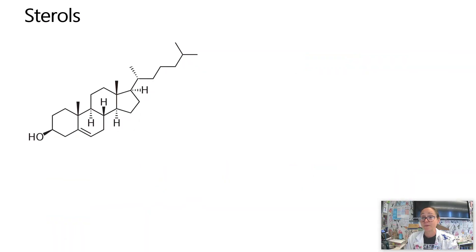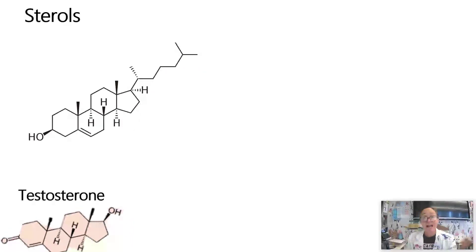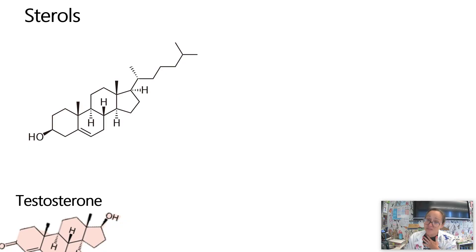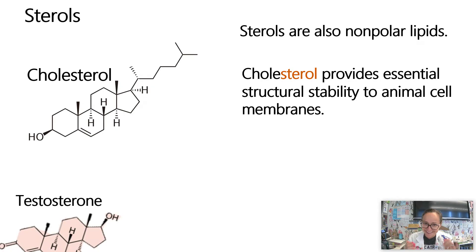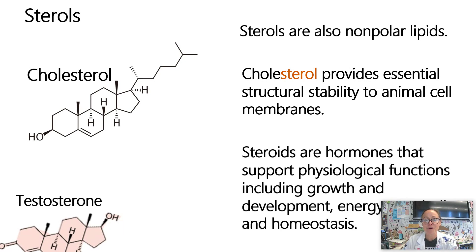Examples of steroid-based hormones include testosterone, estrogen, and cortisol. Another steroid we'll talk about is cholesterol, which is important in our cell membranes for fluidity — making sure animal cell membranes aren't too fluid but also not too viscous. In chapter two, we'll talk more about cholesterol's role in membrane structure and fluidity. Steroids are hormones that support our physiological functions including growth, development, energy, metabolism, and homeostasis.